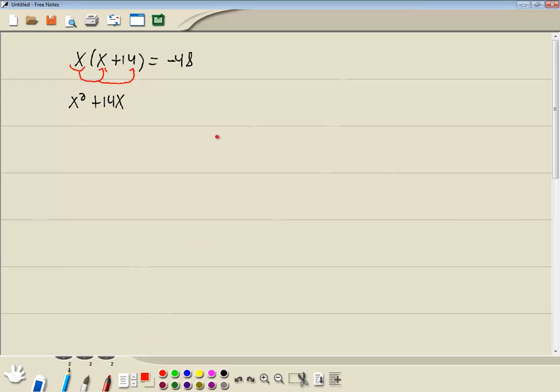And I'll go ahead and, while I'm at it, take that negative 48 and move it over to the left side. So that becomes a positive 48. Now we have zero on the right side.